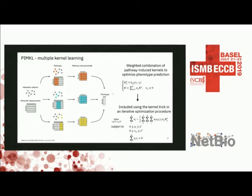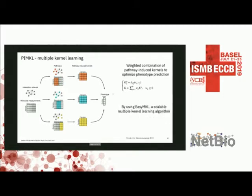Including the weight w into the dual formulation doesn't look so different from the usual SVM formulation. There are different multiple kernel learning algorithms out there — for example, Shogun was recently published as open source — but we're using EasyMKL because it is linear in time with respect to the number of kernels and constant in memory. We have a C++ implementation with Python bindings, also open source. This choice of MKL algorithm does affect how the weights are optimized and how you can interpret them.